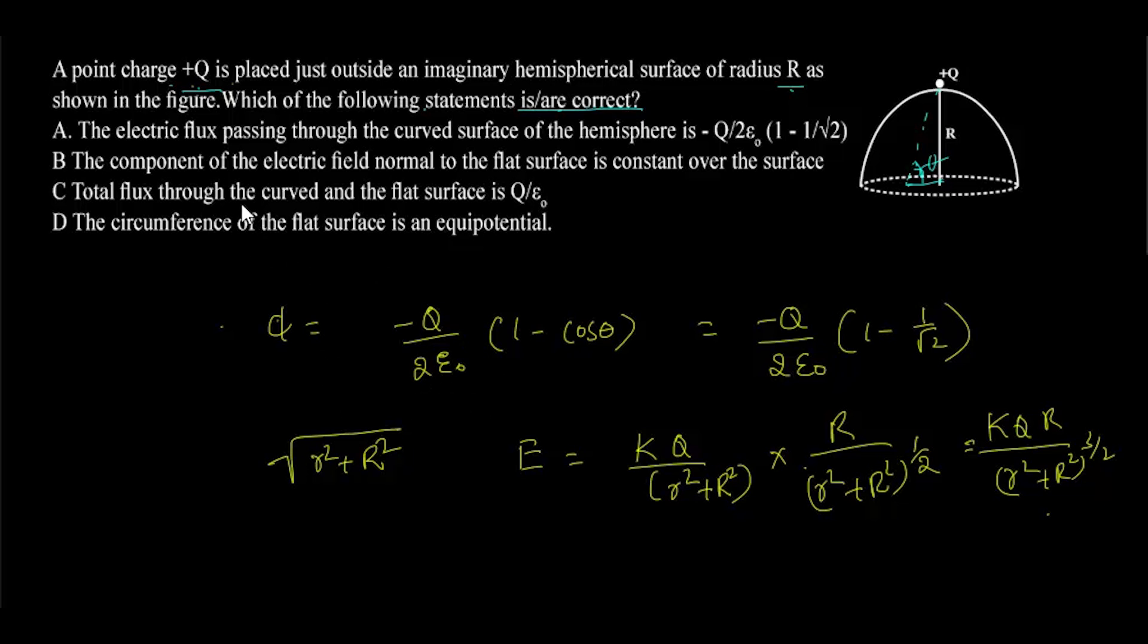The total flux through the curved surface and the flat surface is Q by epsilon naught is false. Since the curved surface and the flat surface doesn't enclose any charge, the net flux through these two surfaces is zero. Hence option C is also false.